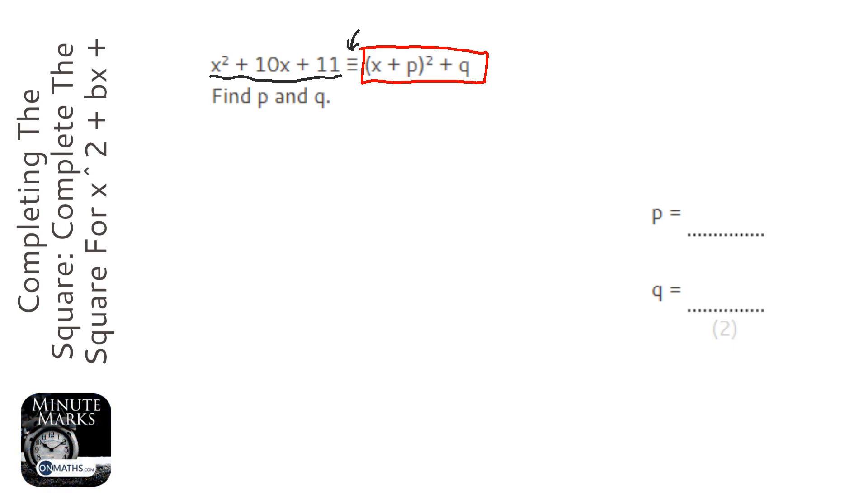Now, to complete the square, we look at this first bit here and go, right, how do we create that in a bracket? To create that, what we do is we put x at the start of the bracket, and we halve the number before the x, that 10, to make 5.